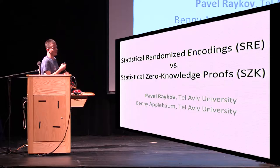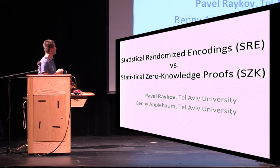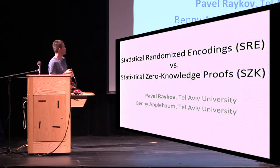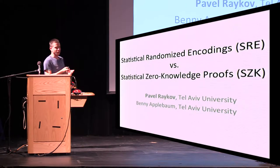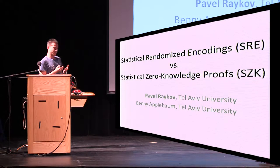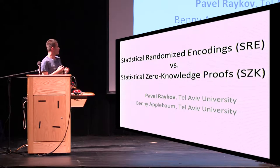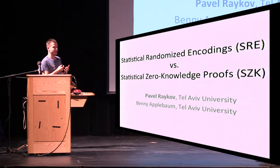My name is Paolo Rakoff and I'm going to present a joint work with Benny Applebaum about statistical randomizing codings versus statistical zero-knowledge proofs. In this work we're going to compare two objects: SRE and SZK, and we will understand the relationship between these two complexity classes.